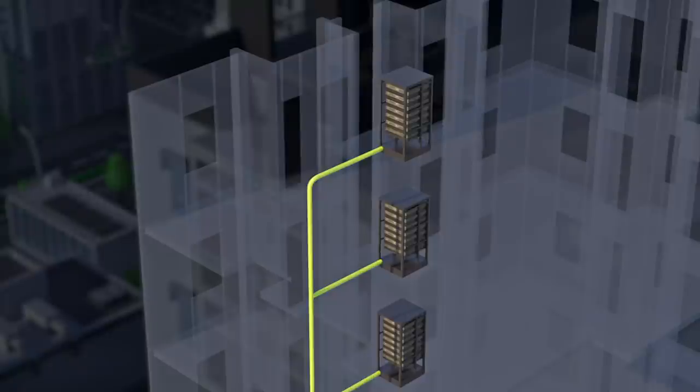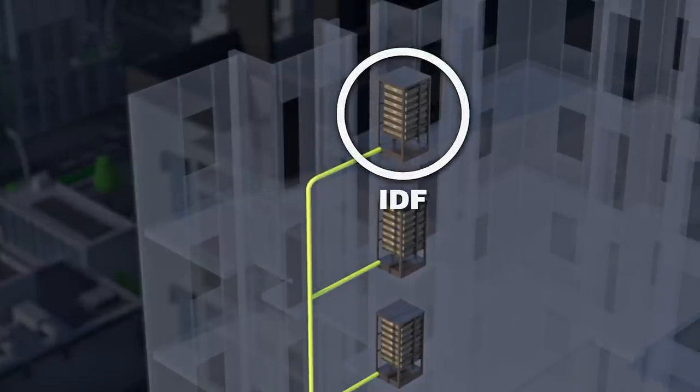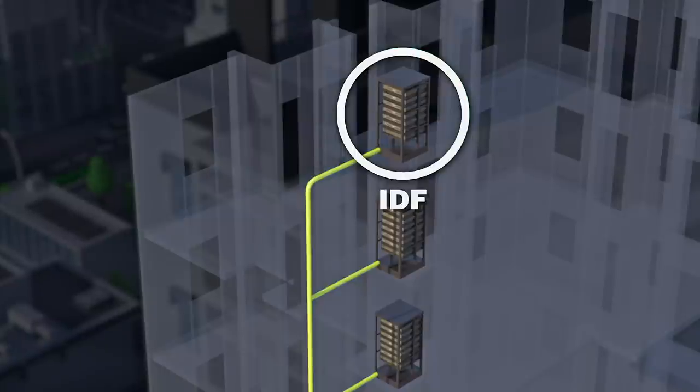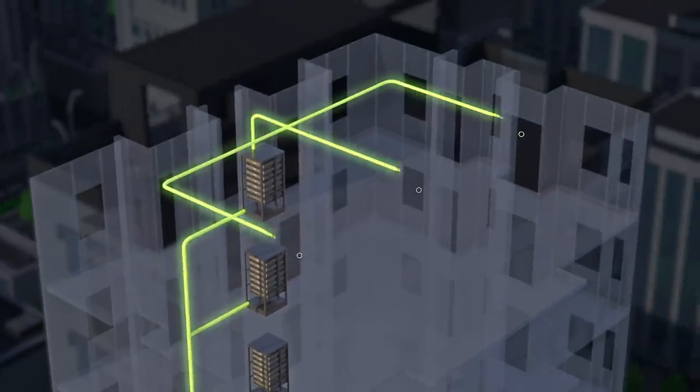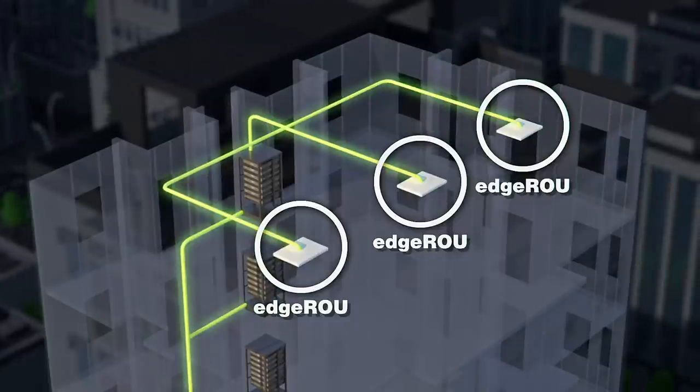From the head-end, fiber-optic cables carry the signals to IDF or smaller IT closets on each building floor. At the IDF room, the optical signals split for distribution to multiple antenna locations.